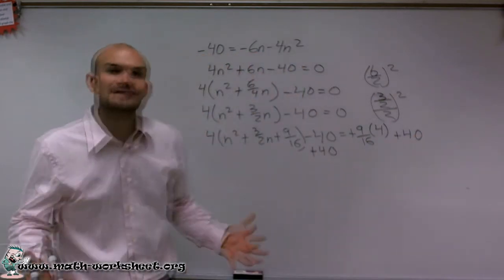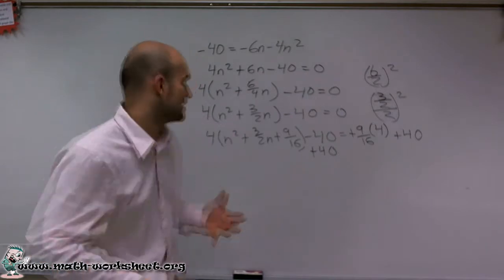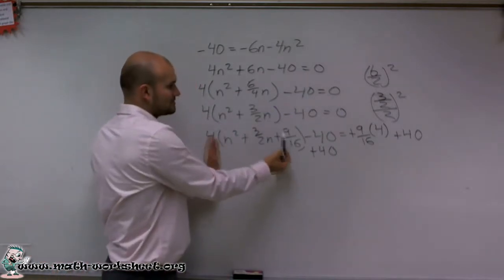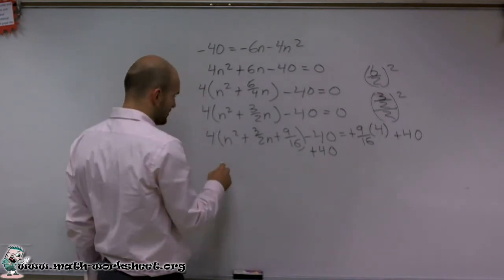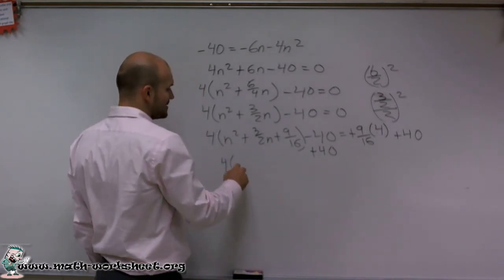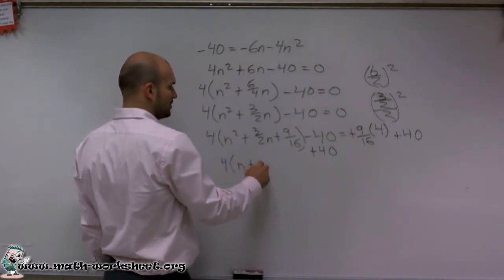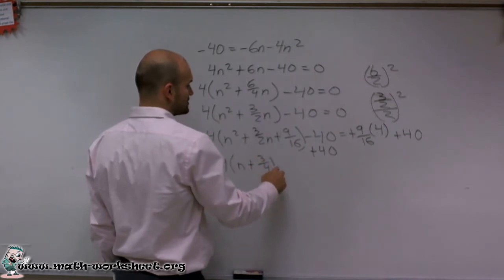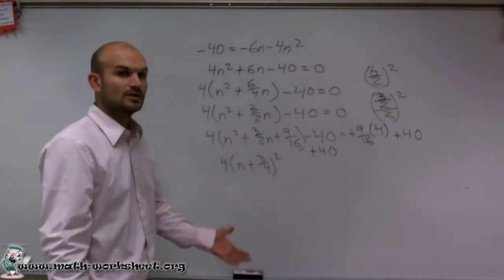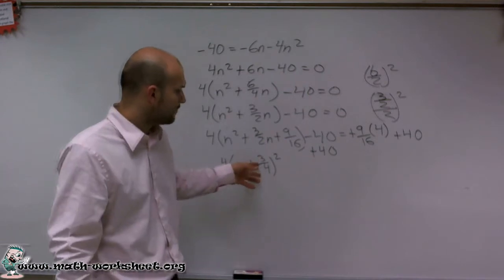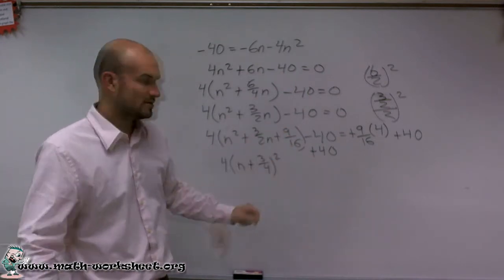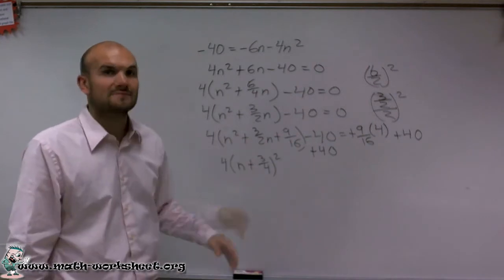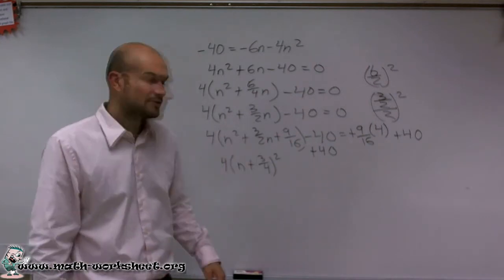So now, the whole reason, ladies and gentlemen, why we do completing the square: to get our perfect square trinomial. So now what I can do is rewrite this as a perfect square binomial, where I can have 4 times n plus 3 fourths squared. Let's take a look at does that make sense. Does 3 fourths, what two numbers multiply to give you 9 sixteenths, 3 fourths, and then add to give you 3 halves. Again, it would be 3 fourths.